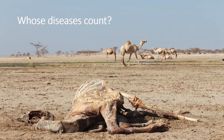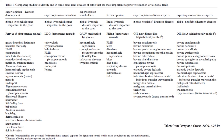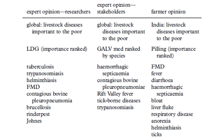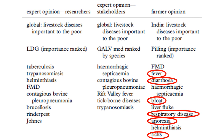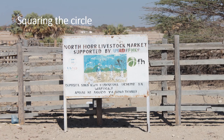Bringing this back to that word cloud from the beginning — I want to highlight a slide showing what diseases are considered important in pro-poor livestock development. I'll leave without comment the fact that livestock development researchers, stakeholders, and disease experts are all listed as 'expert opinions' whereas farmers are just 'farmer opinions.' On the expert side you see FMD, foot and mouth, trypanosomiasis, CBPP, rinderpest. On the farmer side: fever, diarrhoea, anorexia, ticks. We start to disaggregate the scientific edifice from farmer-led understandings of what's going on.